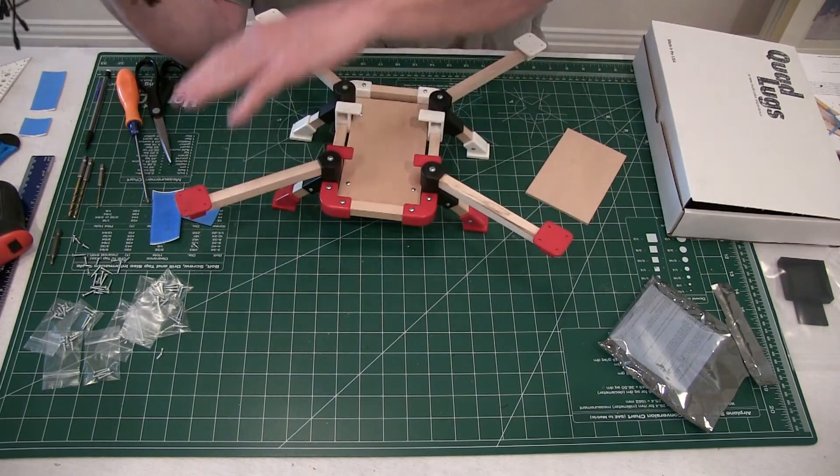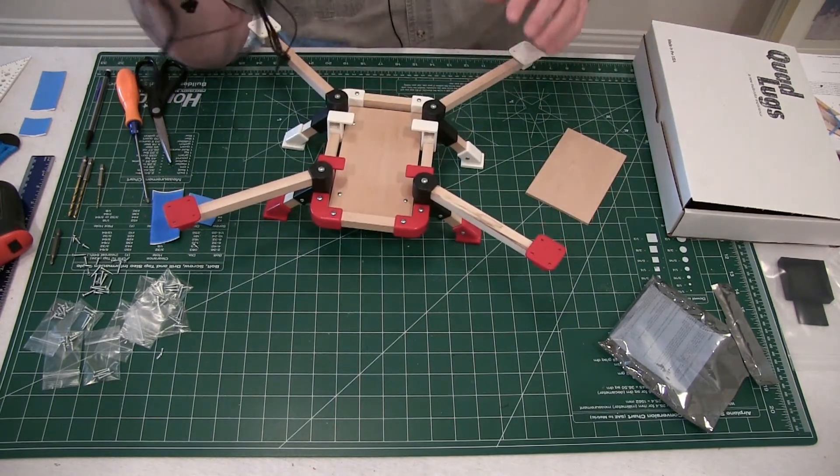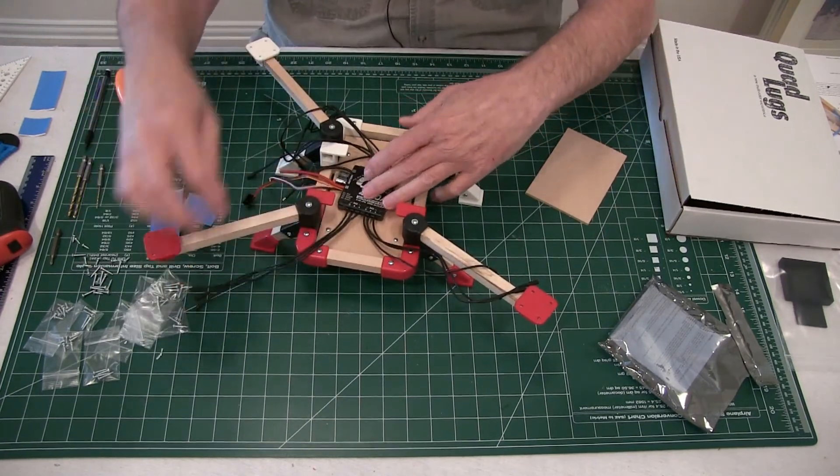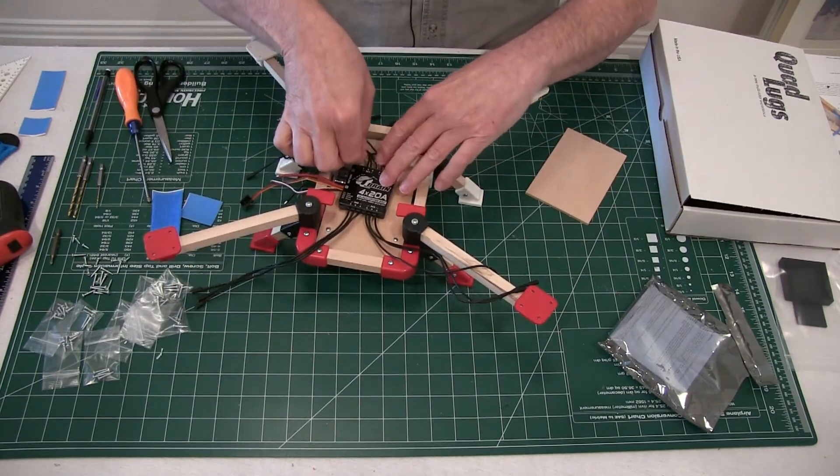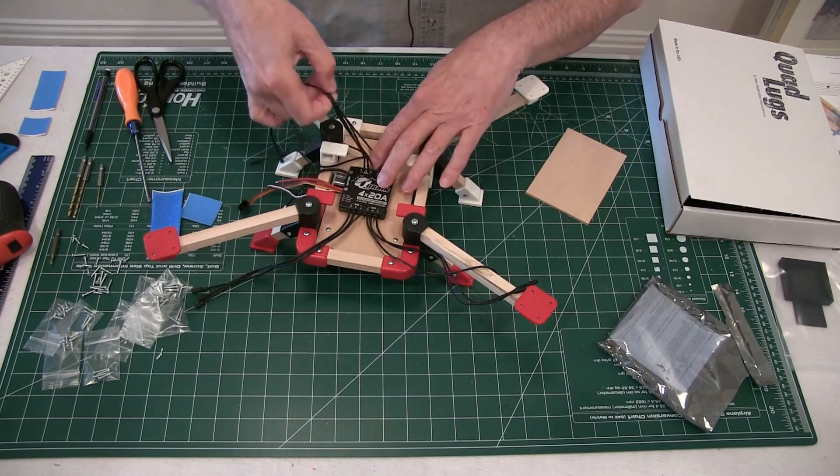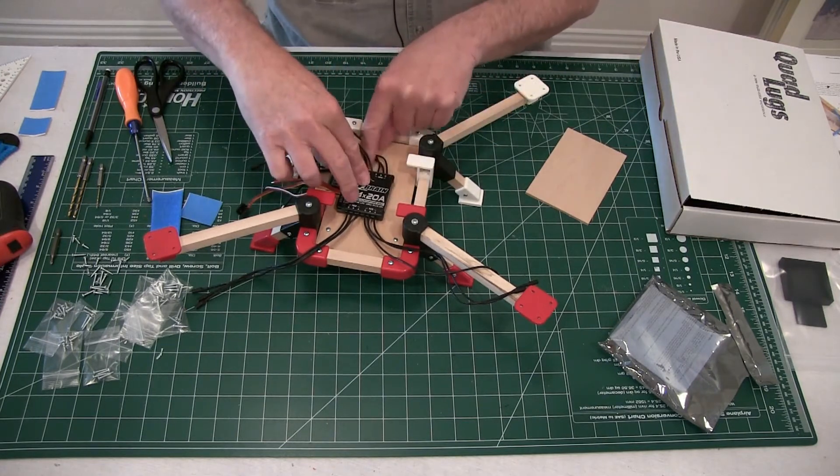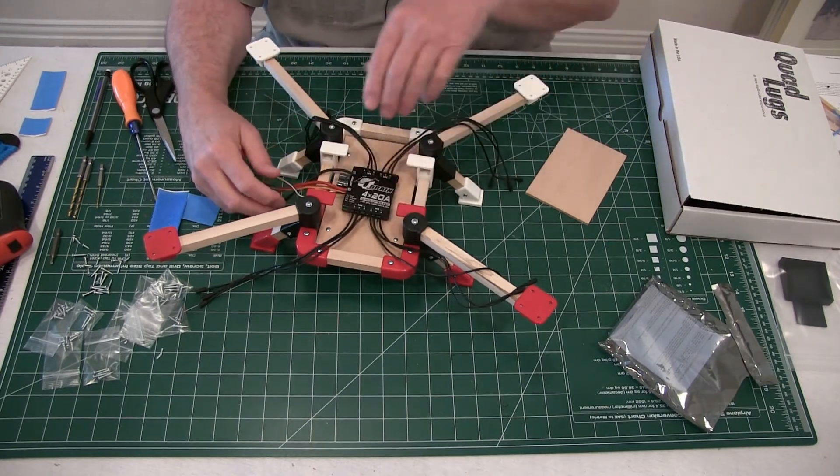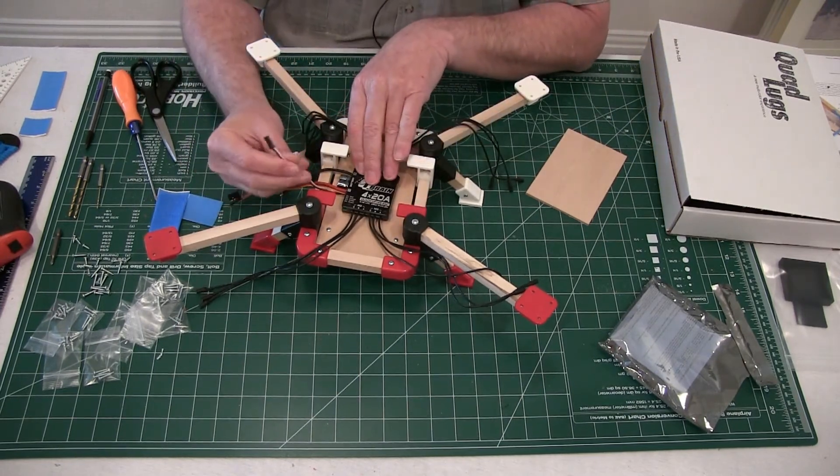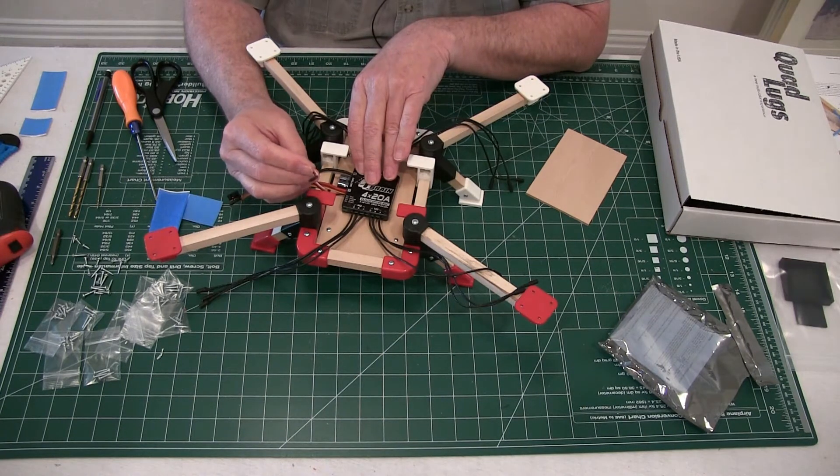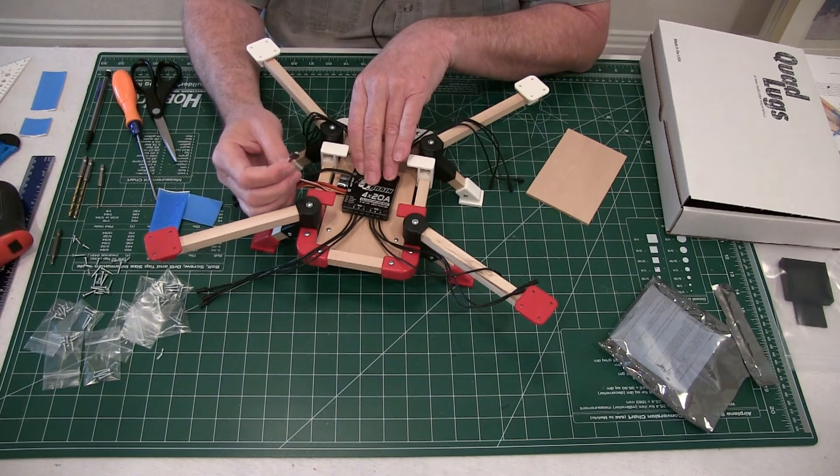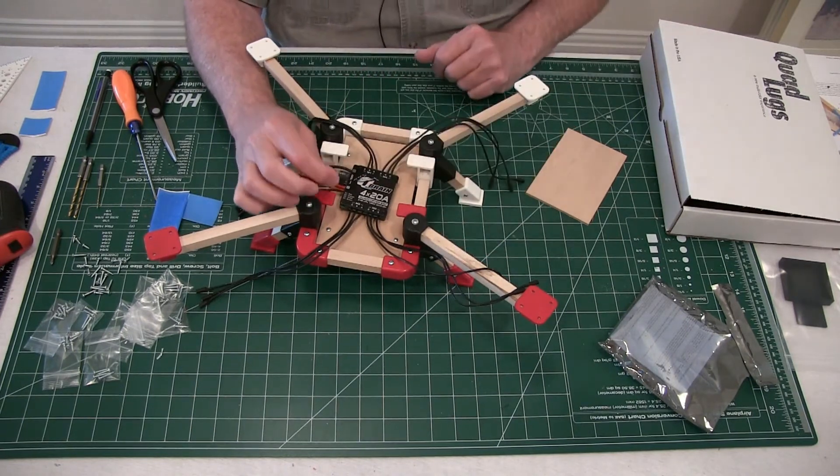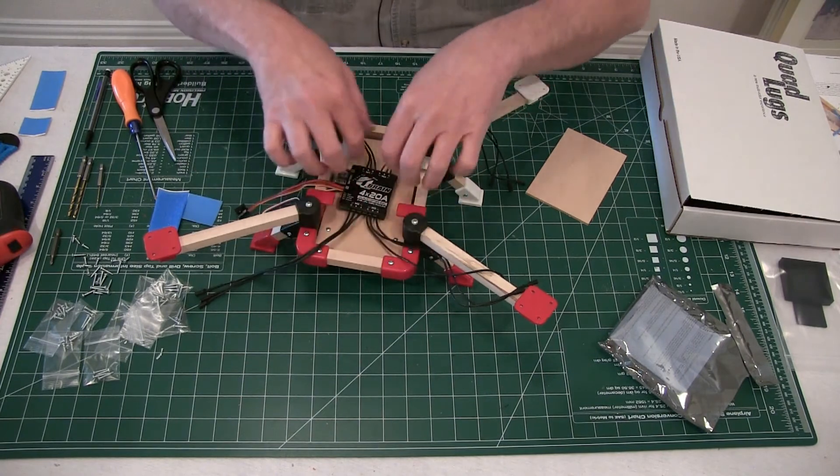This is one, two, three and four. I'm going to use number three as number one, number two is number two, number one on the ESC as number three motor, and number four on the ESC as number four motor. By doing that, I can use the number three connector with the power on it for my number one motor and for my number one on my board. Works really good that way and it lays out really well like this.